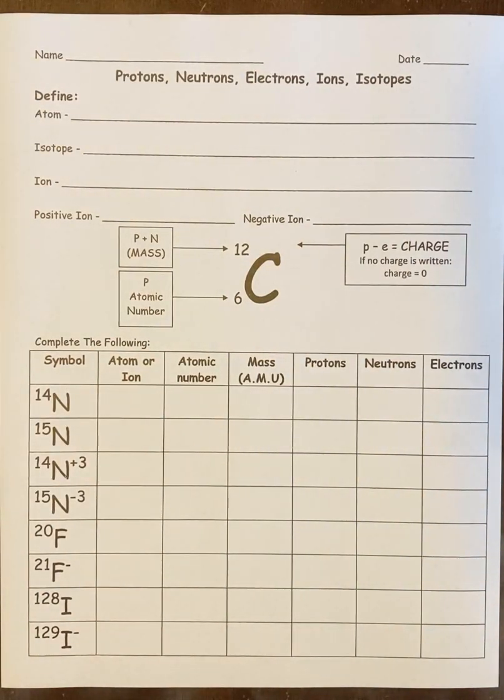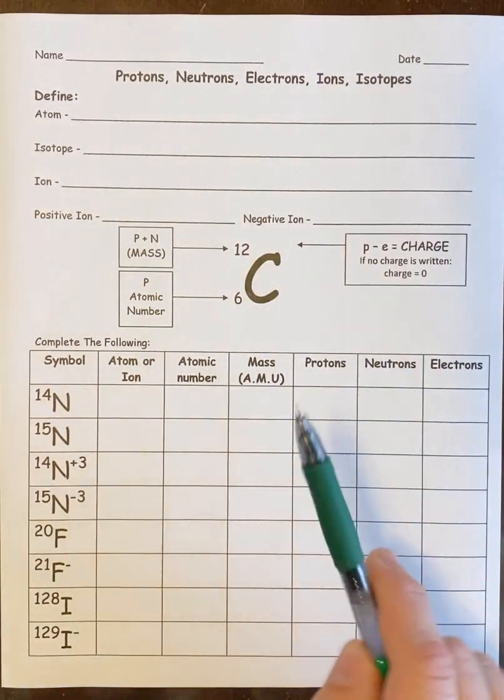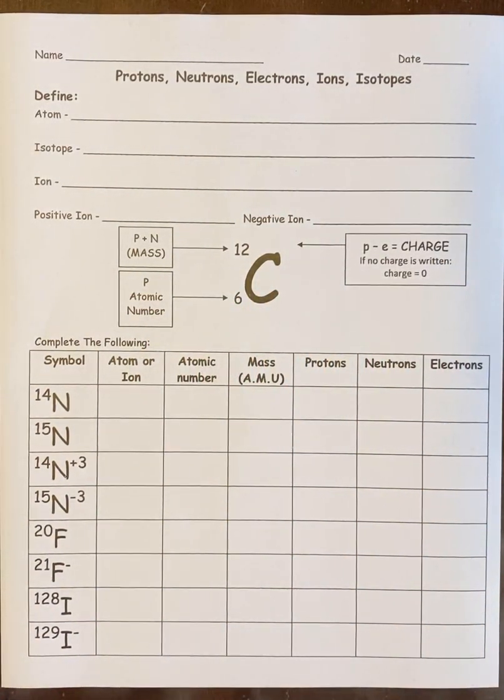In this video, we're going to do some practice problems on this sheet. In the beginning, you have to define atom, isotope, ion, positive ion, and negative ion. If you look through your notes, that'll be there, so I'm not going to fill that in for you. This middle section here is a key. It's showing you everything you need to know to do the rest of it.